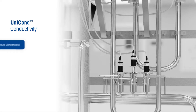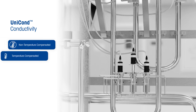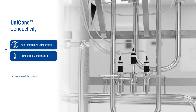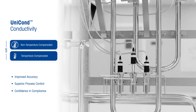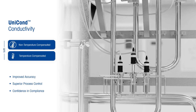Why is conductivity measurement critical? USP-645 requires uncompensated conductivity and temperature measurements to determine the final water quality, whereas USP-644 and 1644 recommend the use of compensated conductivity and temperature measurements for process control. A digital conductivity sensor can record both compensated and uncompensated conductivity as well as temperature on a single sensor to meet all requirements.